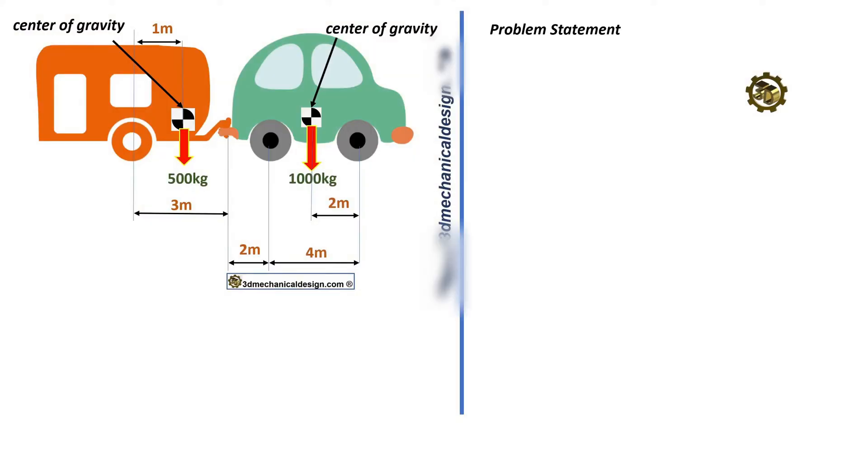A car trailer system has the following specifications. Mass of car: 1,000 kilograms. Mass of trailer: 500 kilograms. Distance between car wheels: 4 meters.